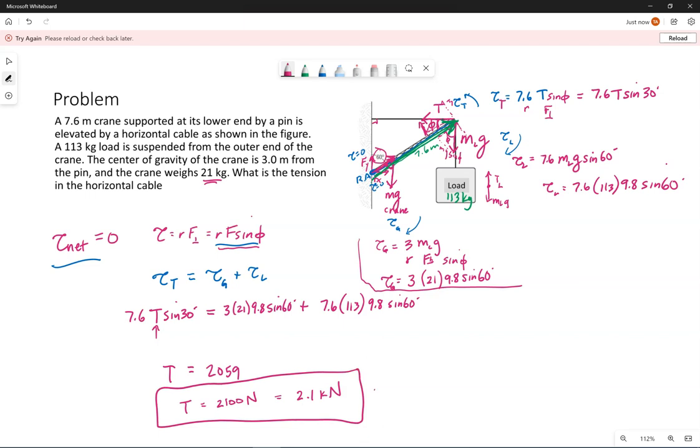And scientific notation, too. 2.1 times 10 to 3 newtons would be fine. But we do have to consider significant figures. We can't be accurate to those four digits. So hopefully you're seeing the approach.